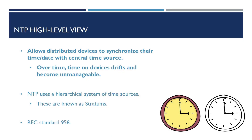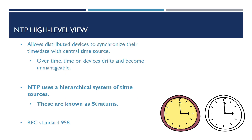NTP is used within our network to allow our devices to synchronize their clocks with a central time source. As time goes on, our device time drifts and slowly becomes inaccurate and unmanageable, especially at a larger scale.